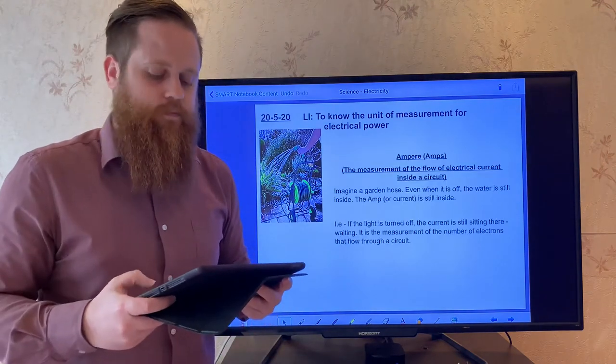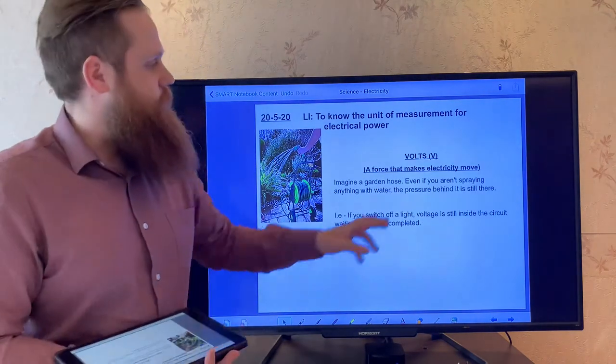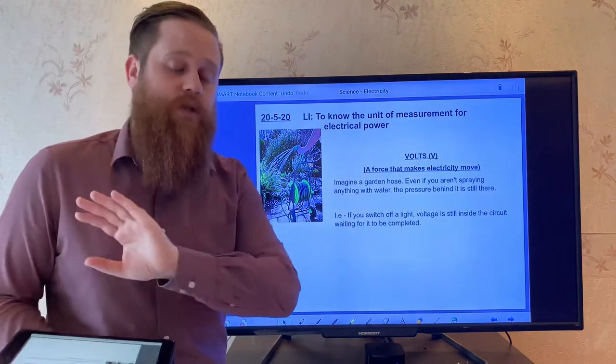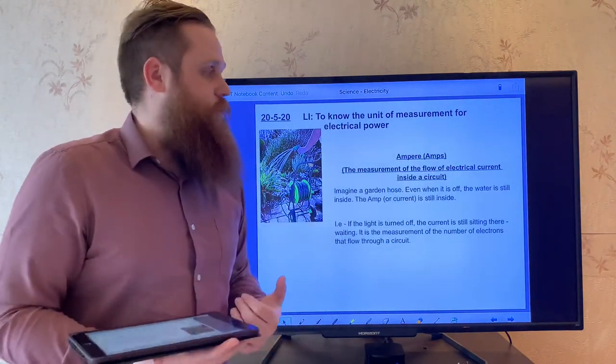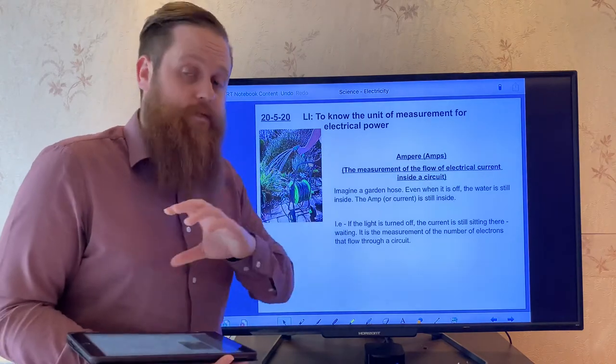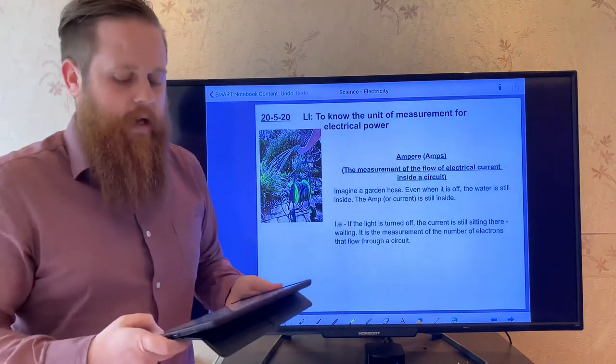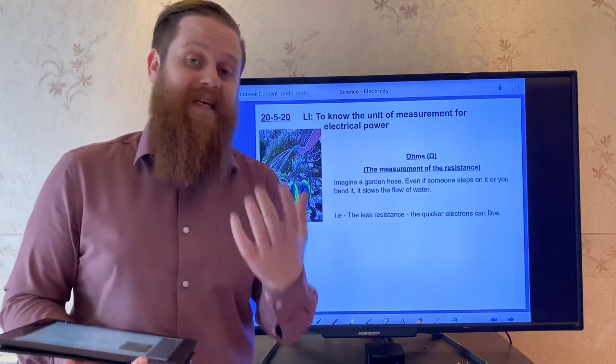So to recap, in electrical circuits, we use volts to measure the force that makes electricity move. We use amps to measure the electrical currents that flows through the circuit. And we use ohms to measure the amount of resistance.